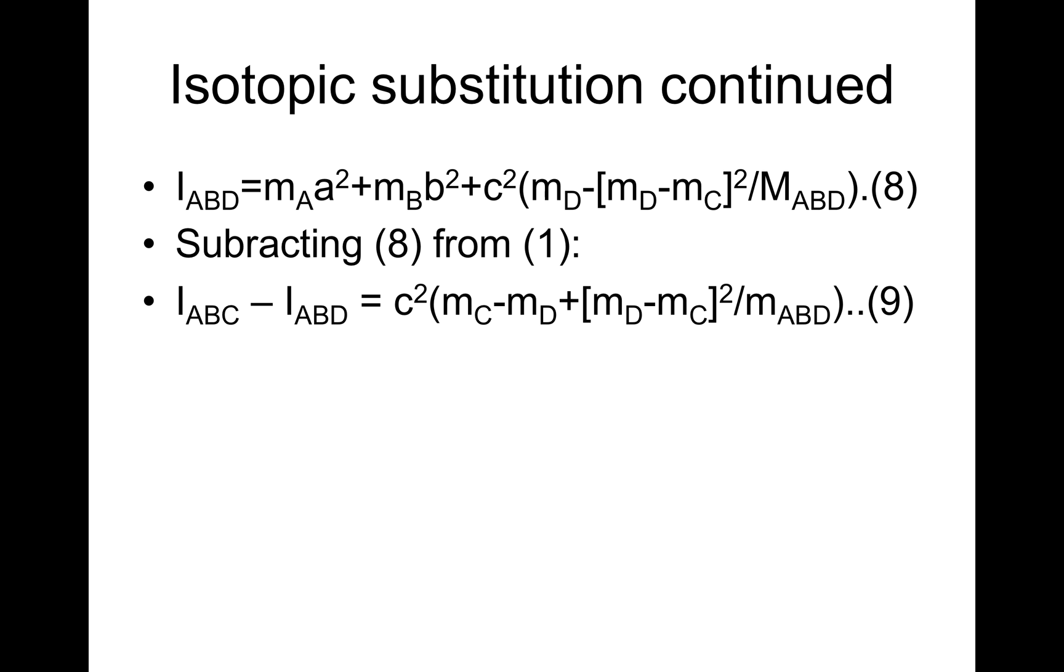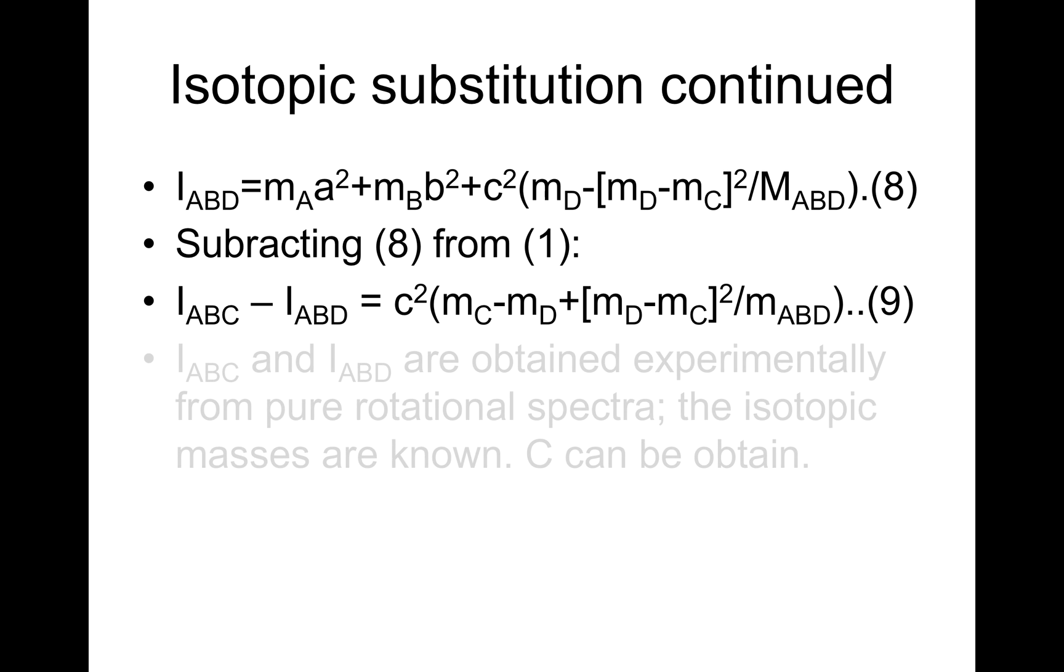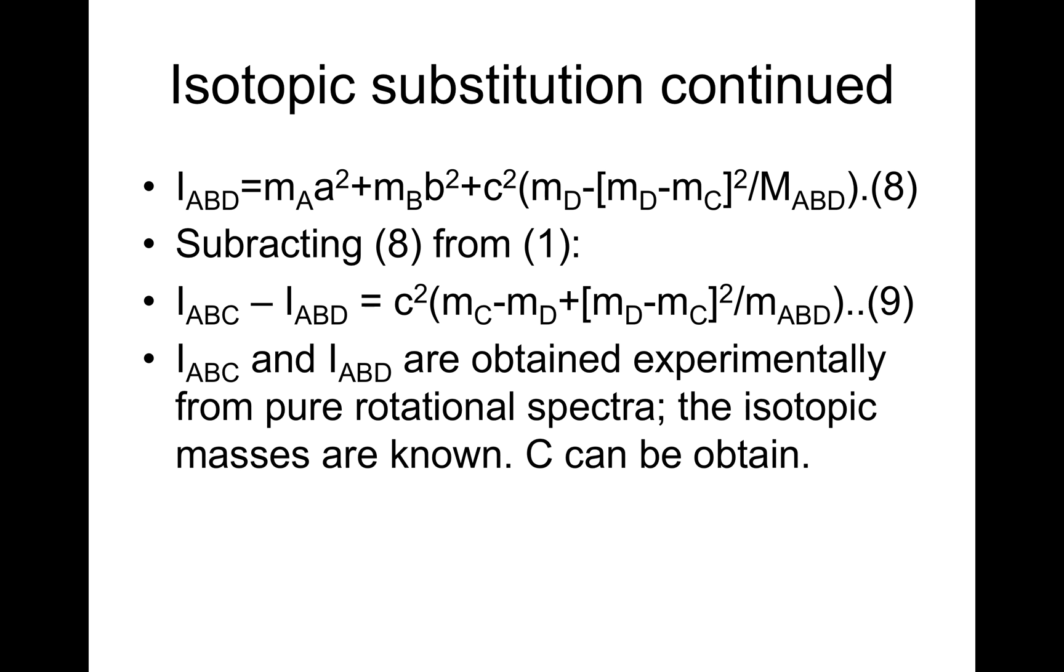Is equal to c²*(m_C - m_D + (m_D - m_C)²/M_ABD). That's equation 9. I_ABC and I_ABD are obtained experimentally from pure rotational spectra. The isotopic masses are known. C can be obtained, therefore.